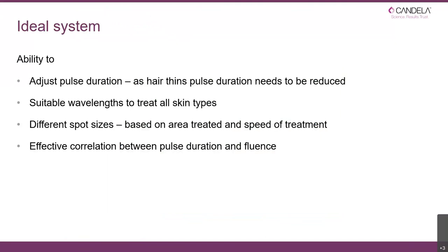The ideal system needs to have the ability to adjust the pulse duration. As already mentioned, if we're treating thick hair we need longer pulses, and if we're treating thinner hair we need shorter pulses. Additionally, as you move through the first, second, third, and subsequent treatments, the hair will start to become thinner. A very thick coarse hair after the first treatment may by treatment four be significantly thinner — at which stage you need the ability to reduce your pulse duration so you're still keeping enough heat in the target to destroy it, rather than the heat diffusing into surrounding tissue over such a long period that you never reach the critical temperature.